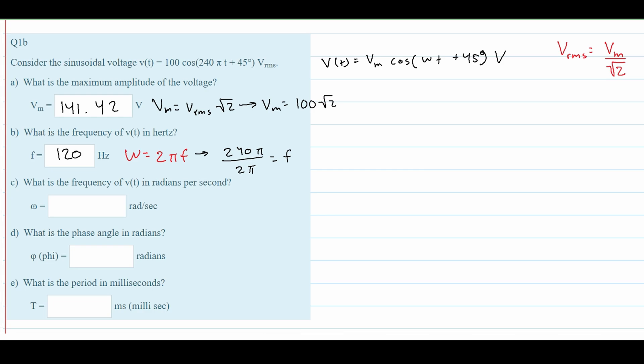For part C, what is the frequency in radians per second? We want to find ω, which we know is 240π. Multiplying these together gives approximately 753.98 rad/s.